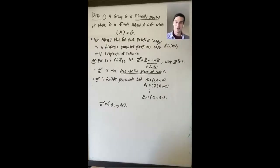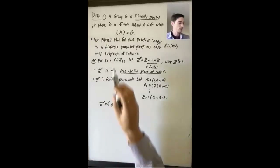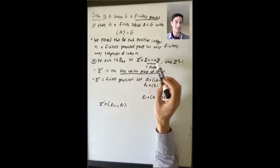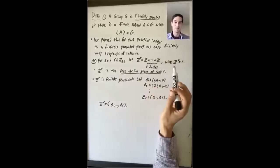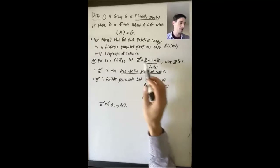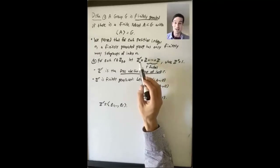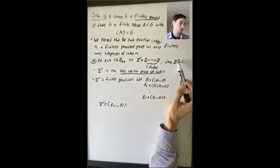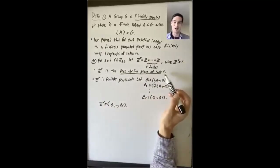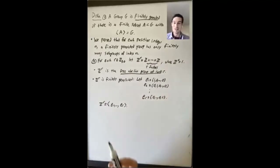One more piece of notation before we state this big theorem. For each non-negative integer R, we're going to let Z^R be our notation for the direct product of Z with itself R times. Z^0 is going to be the trivial subgroup. So Z^R is infinite if R is positive, and it's the trivial subgroup if R equals zero. This is called the free abelian group of rank R, and this is one example of a finitely generated group.